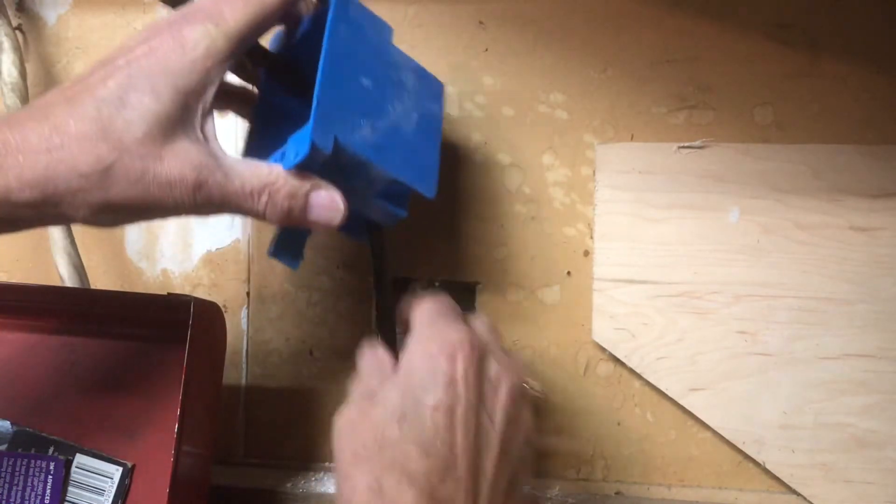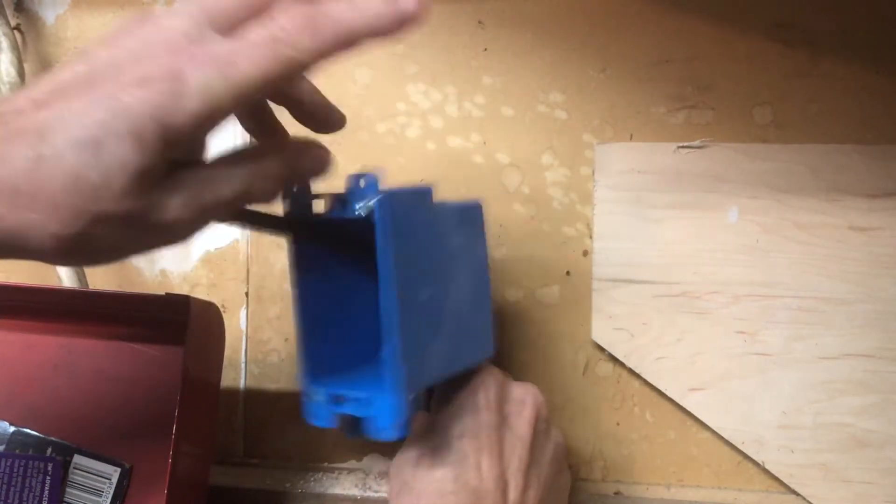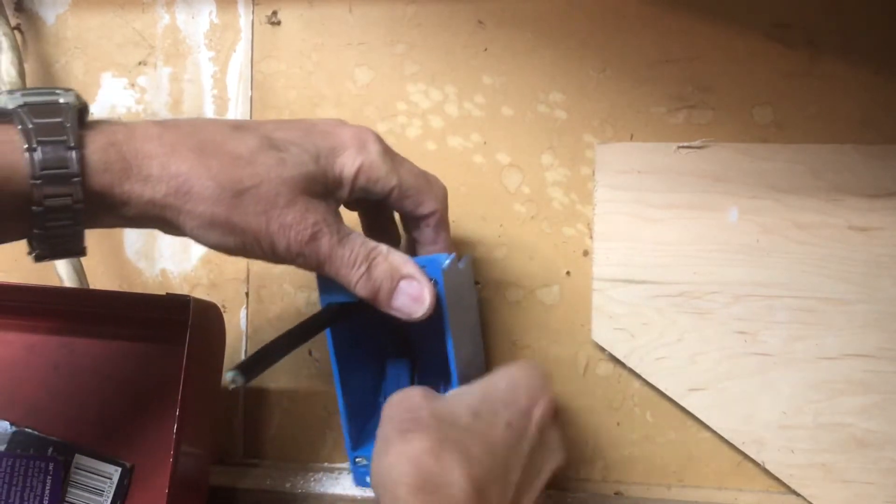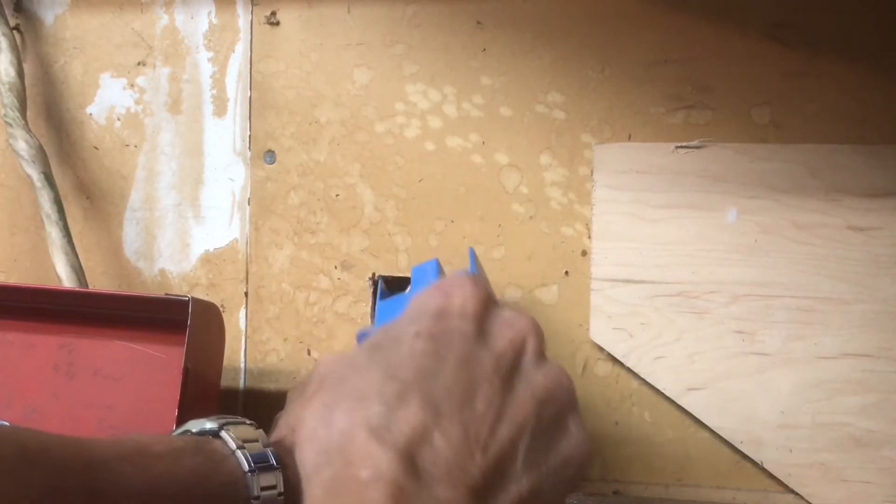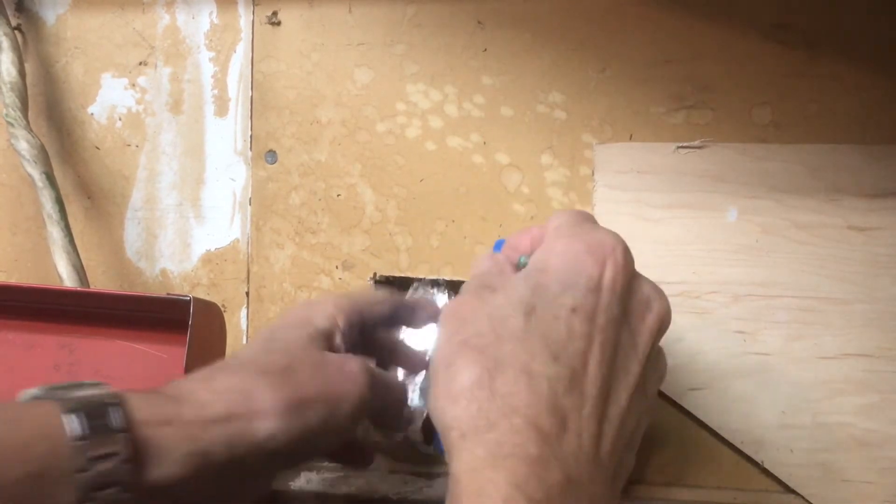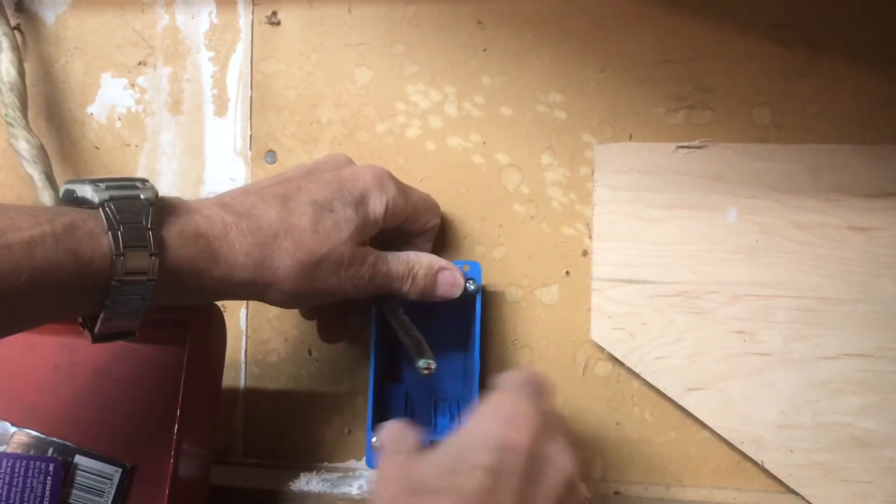If you're using Romex you're going to have a solid core wire. But this is braided and this is a 14 gauge. We'll stick our box back in the hole.